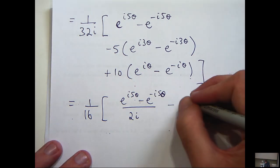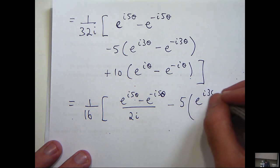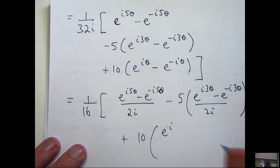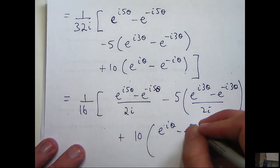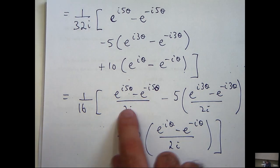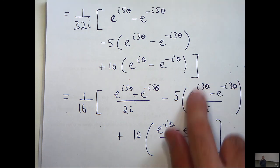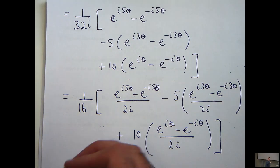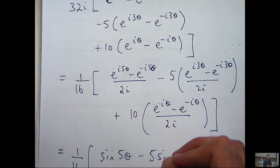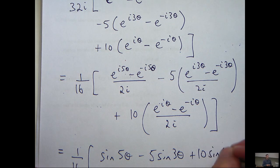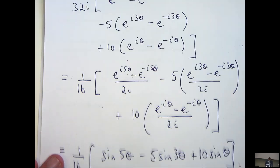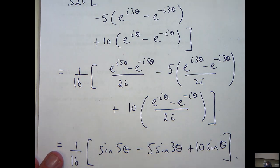So now, hopefully, you can recognize that this is just sine 5 theta, this is just sine 3 theta, and this is just sine theta, so I've actually got the simplification that I'm looking for. So what I've done there now is I've written sine theta all to the power of 5 in terms of sine theta, sine 3 theta, and sine 5 theta.